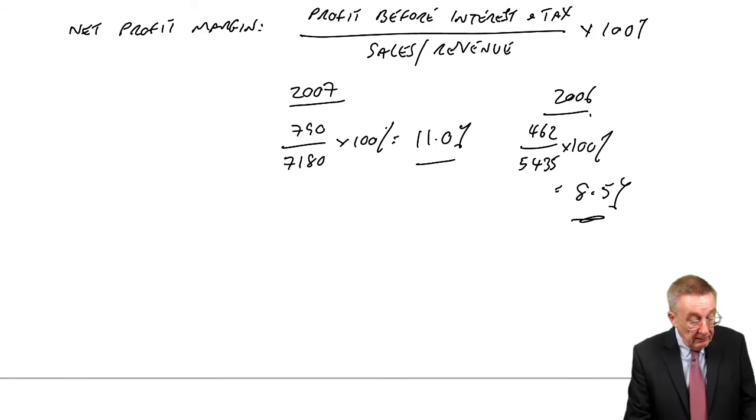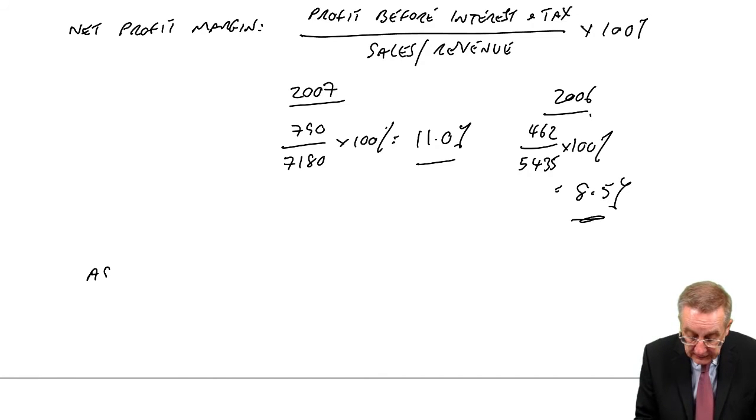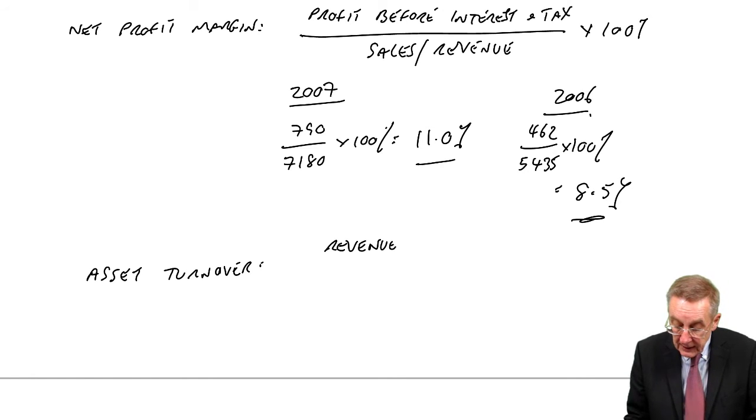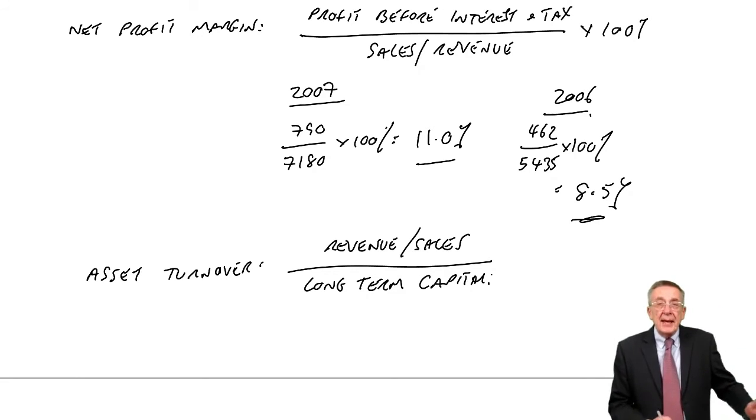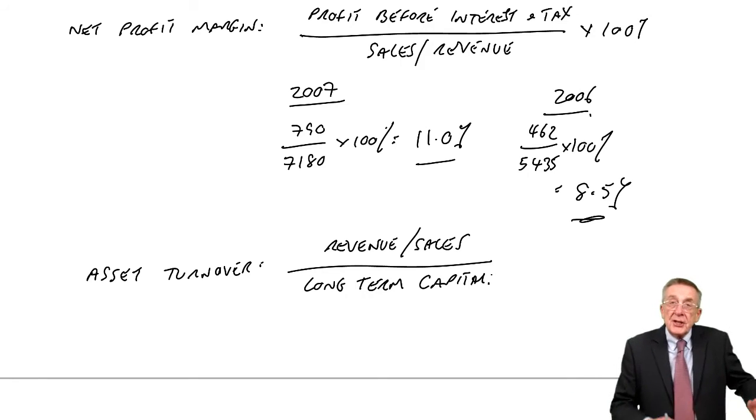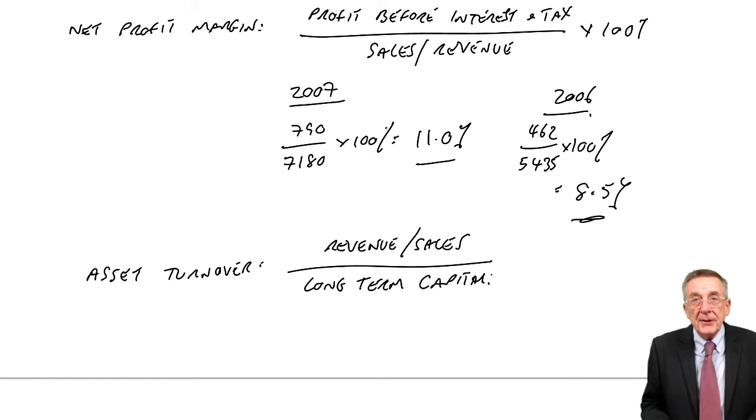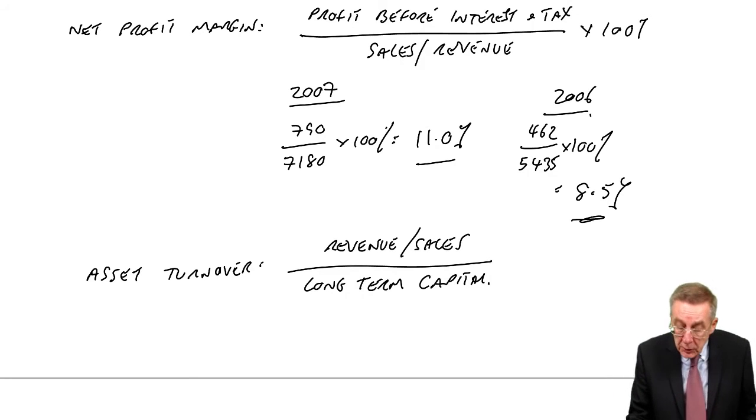As you see on my list, it's the next one, the asset turnover. The asset turnover is the revenue or the sales, divided by the long-term finance, the long-term capital. It's saying, as the company's bigger because they've raised more money, we expect there'll be more sales. But we look at the ratio, and usually this is just a number, not a percent.